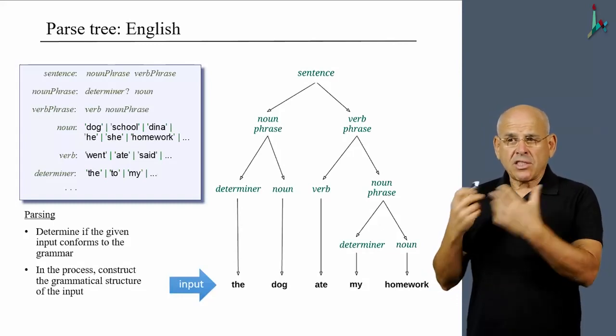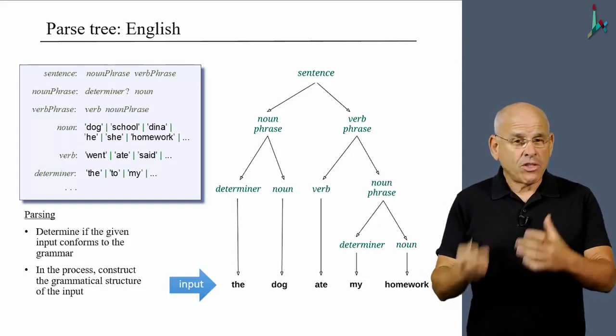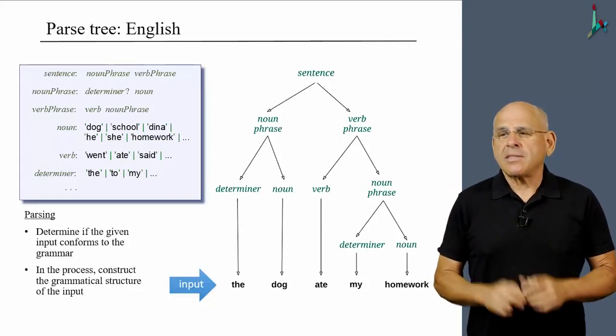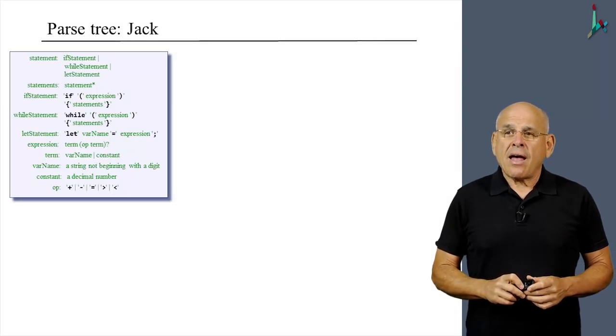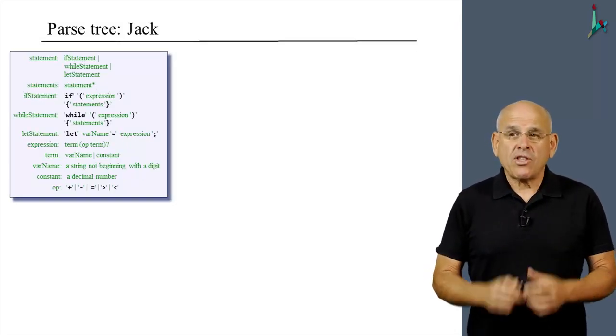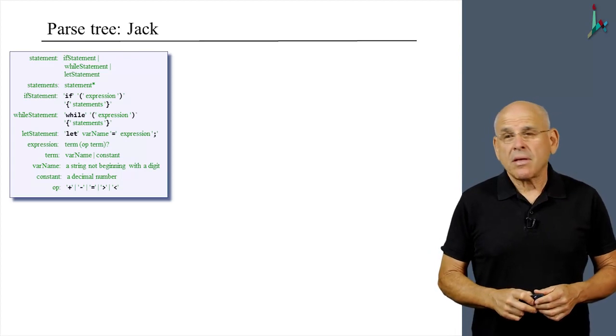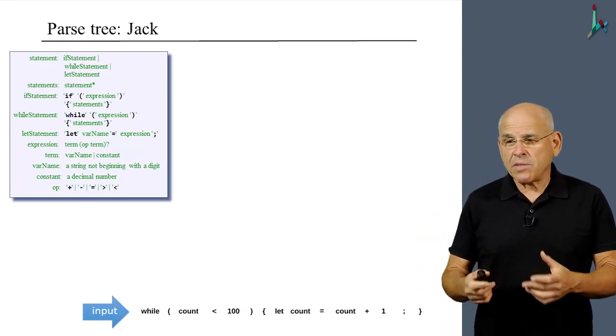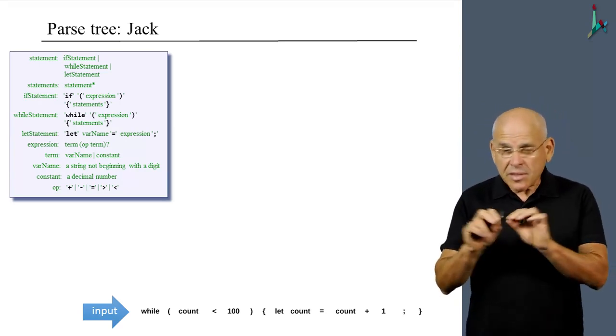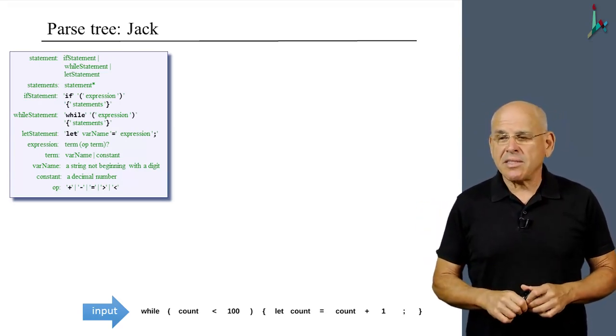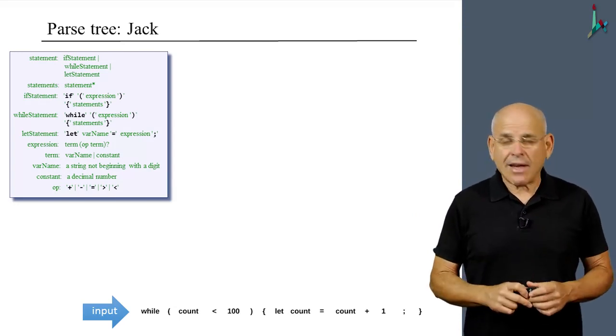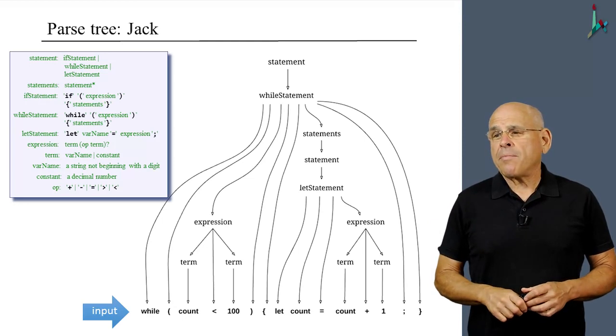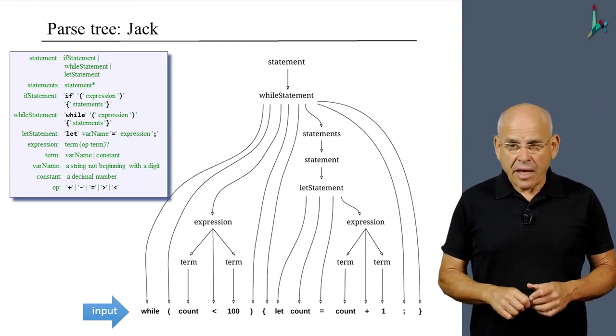Now, that's the story with a language like English, and of course, a very simple, simple-minded example. And let's move to Jack. Well, in Jack, we have a different grammar and different kinds of inputs that correspond to certain subsets of statements in some programming language, well, in the Jack language.